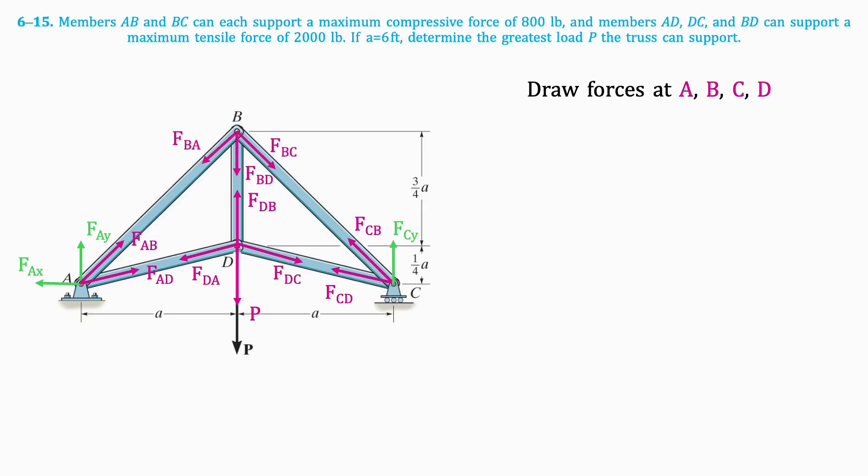First, let's find the angle between FAB and the horizontal. Given that A equals 6 feet, the height of the triangle is 6 feet, and so is the base. Taking the tan inverse of this ratio, we get that the angle is 45 degrees.